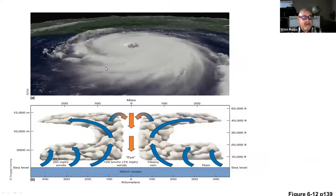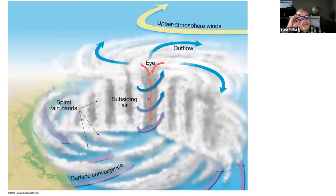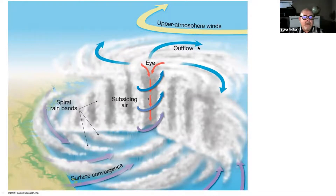Here's a kind of three-dimensional view of what you would see from space looking down at it. The side profile shows air spiraling inward, some spiraling out, and then part of it moving downward through the eye, causing calm conditions in the eye. You have surface winds spinning into it, spinning upward, then spiraling outward in the upper atmosphere, and some air returning down through the eye.